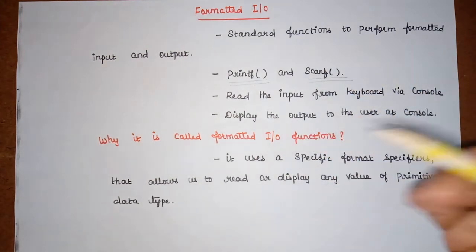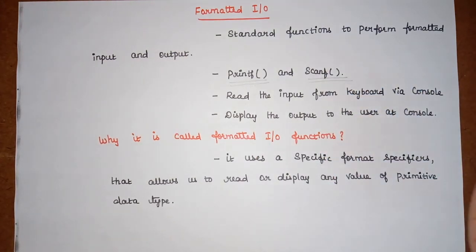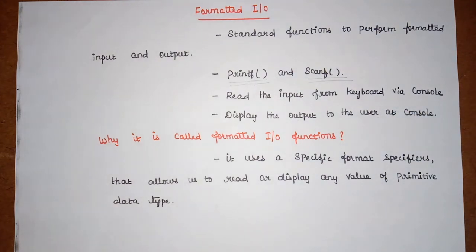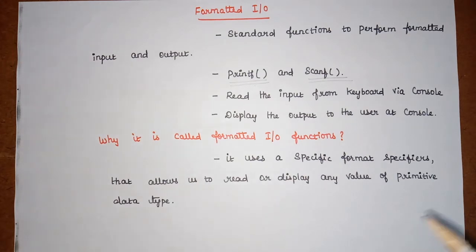So why is it called formatted input/output? It is called formatted I/O because it uses some specific format specifiers. This allows us to read or display any value of primitive data types. There is a specific format we have to follow — only with that format can we write printf and scanf statements. That is why these functions are called formatted I/O functions.